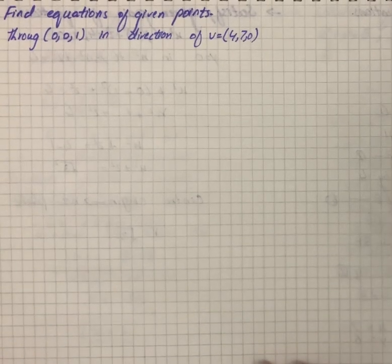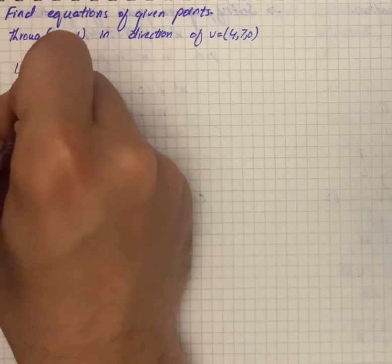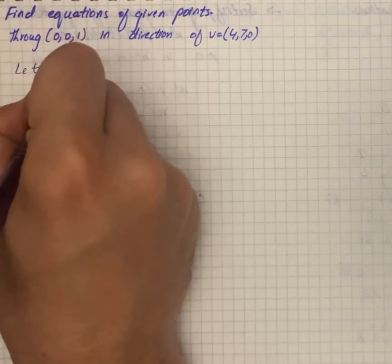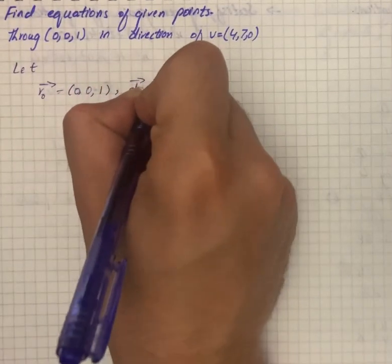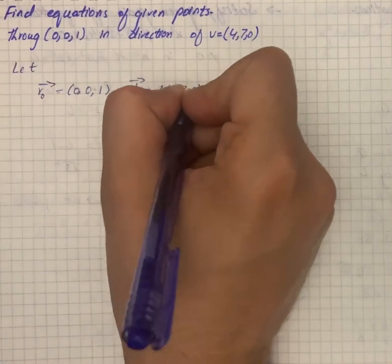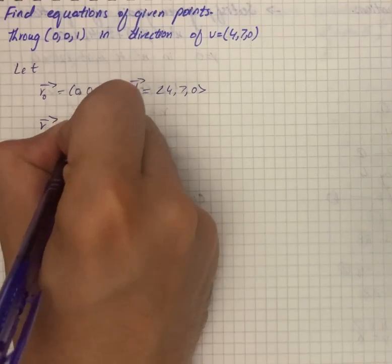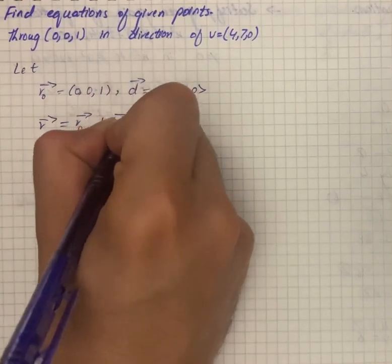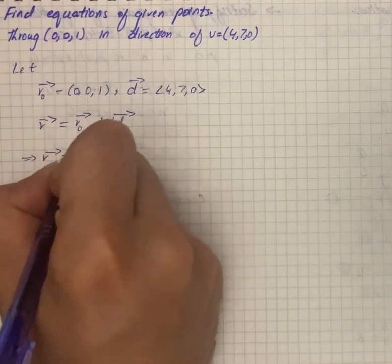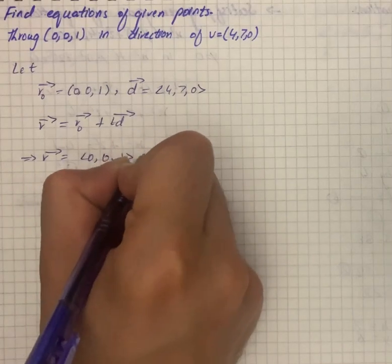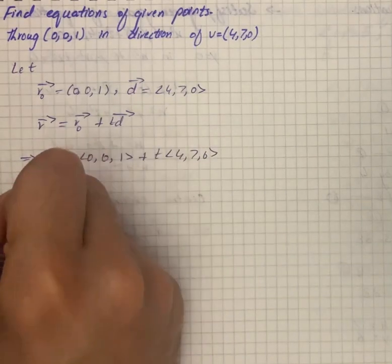We have to find the equation of a line given a point. We let r0 prime equal to (0, 0, 1) and d vector equal to (4, 7, 0). The vector equation of the line will be r equals r0 plus t times d, so we can write r vector equals (0, 0, 1) plus t times (4, 7, 0).